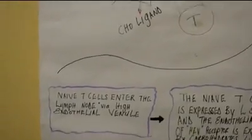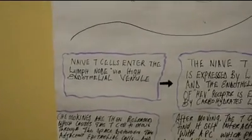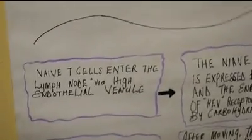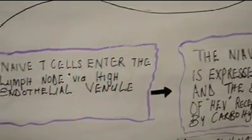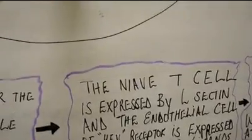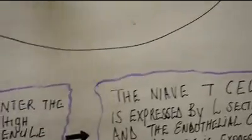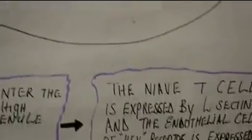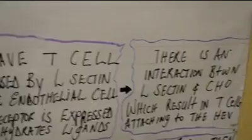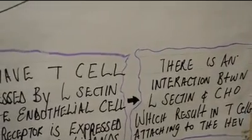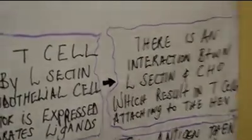Remember that this process occurs in the lymph node. Naive T-cells enter the lymph node via high endothelial venules. Here we find the naive T-cells which express L-selectin and the endothelial cells of the high endothelial venule receptor, expressing carbohydrate ligands. There is an interaction between the L-selectin and carbohydrates which results in T-cells attaching to the high endothelial venule.